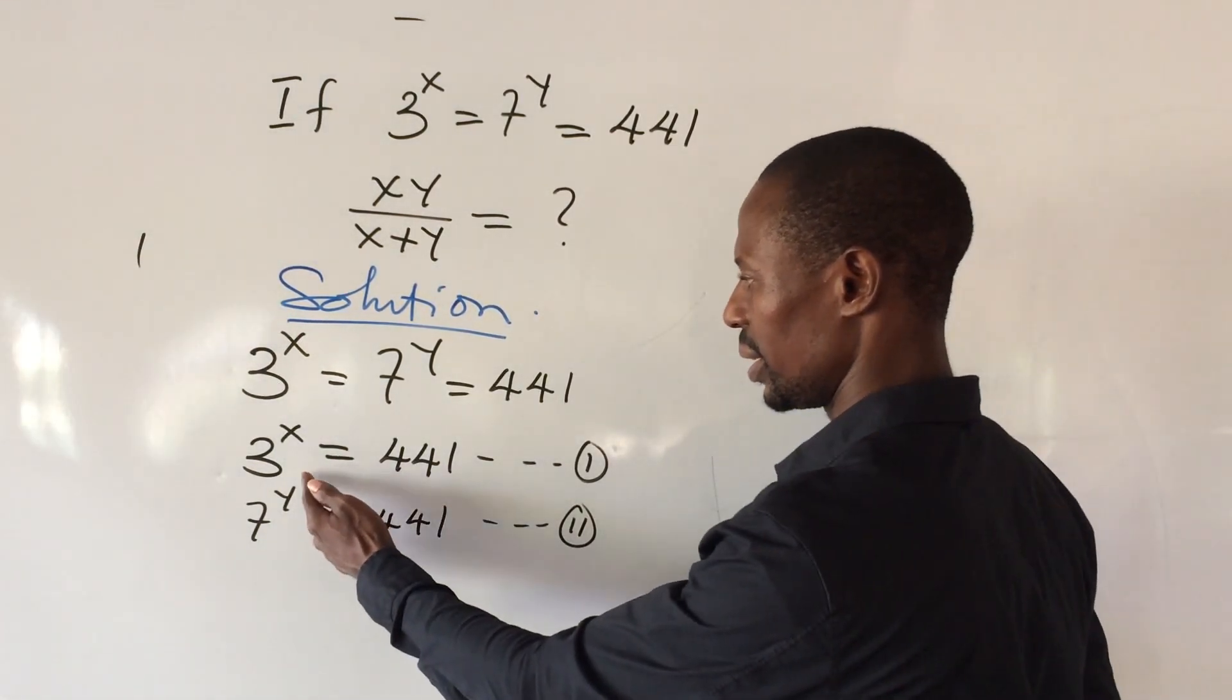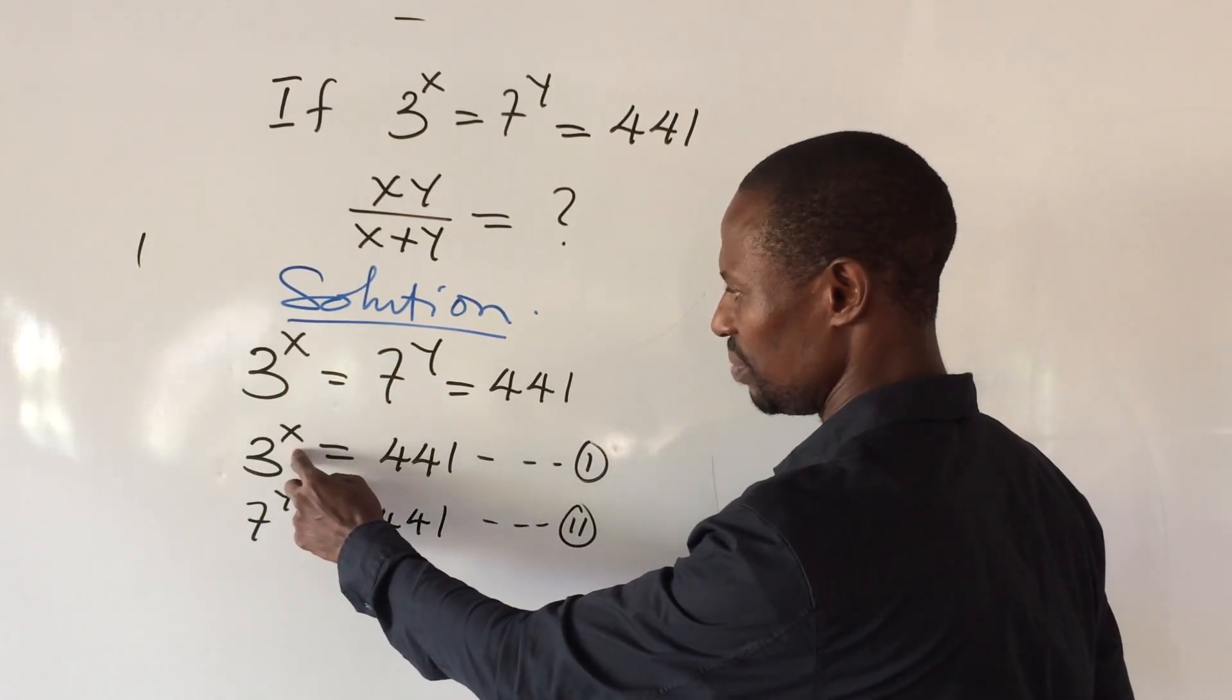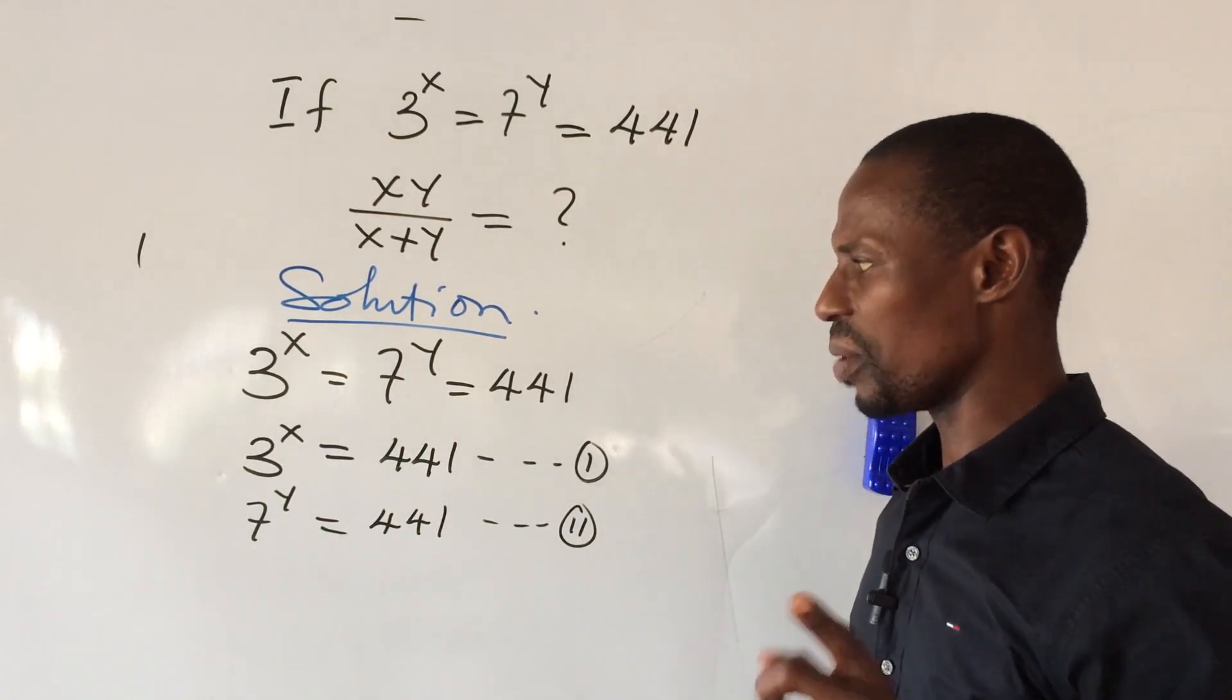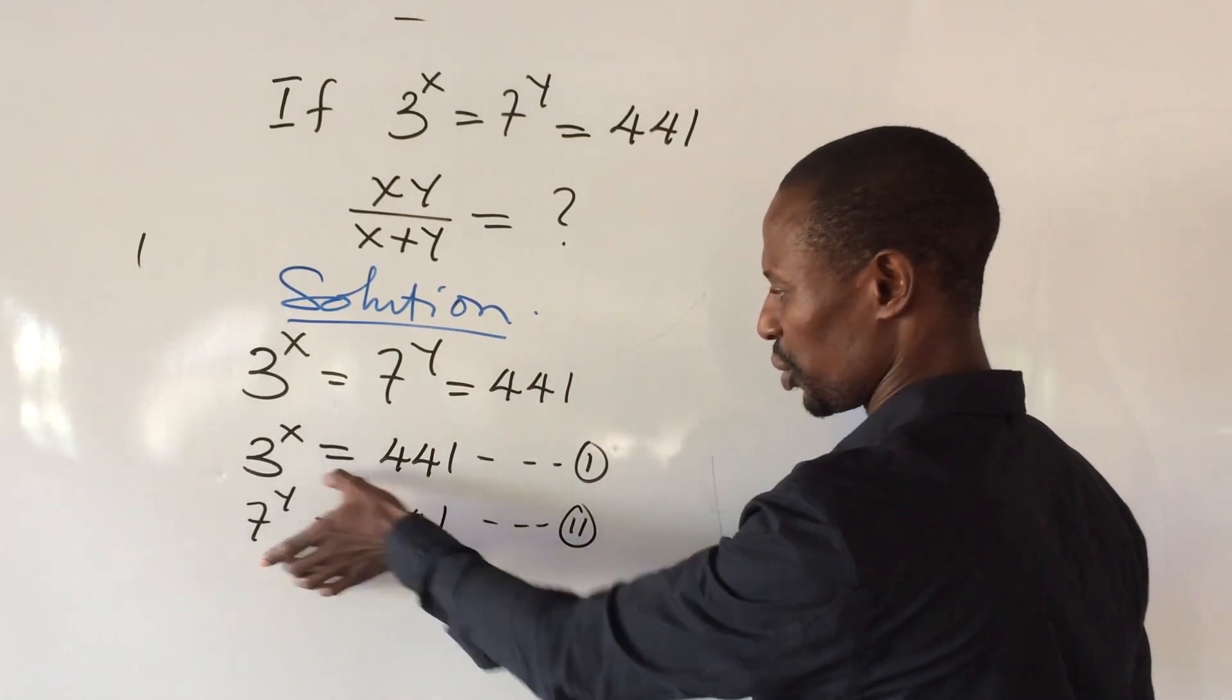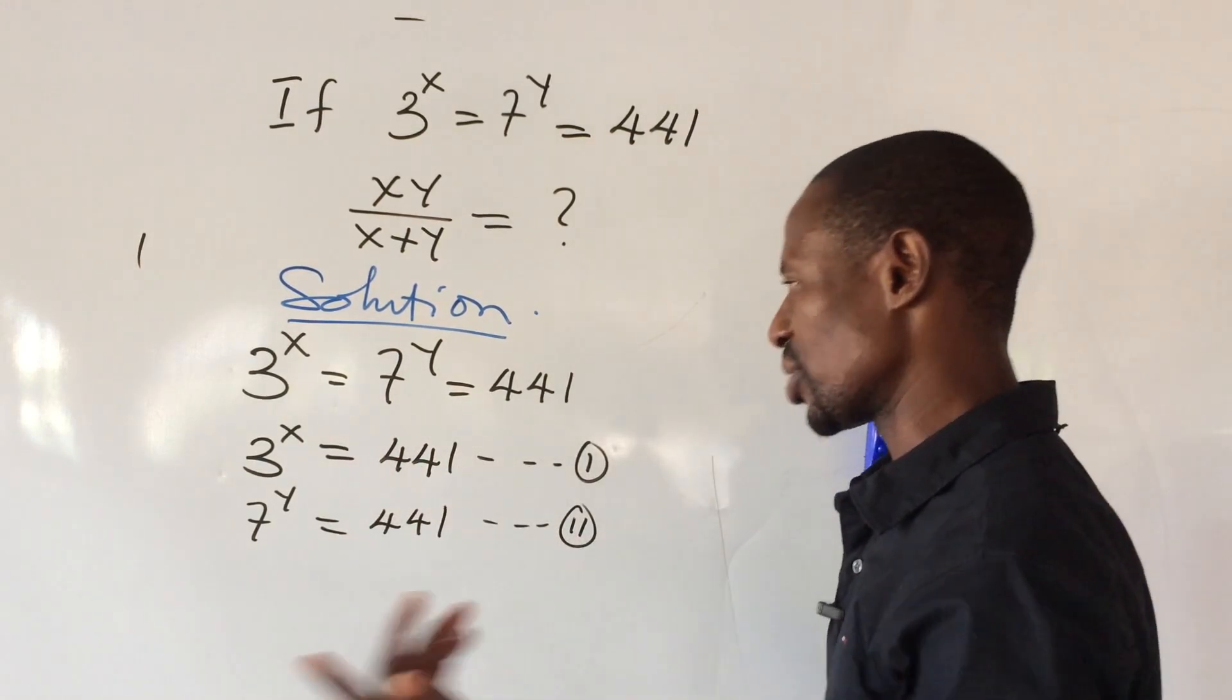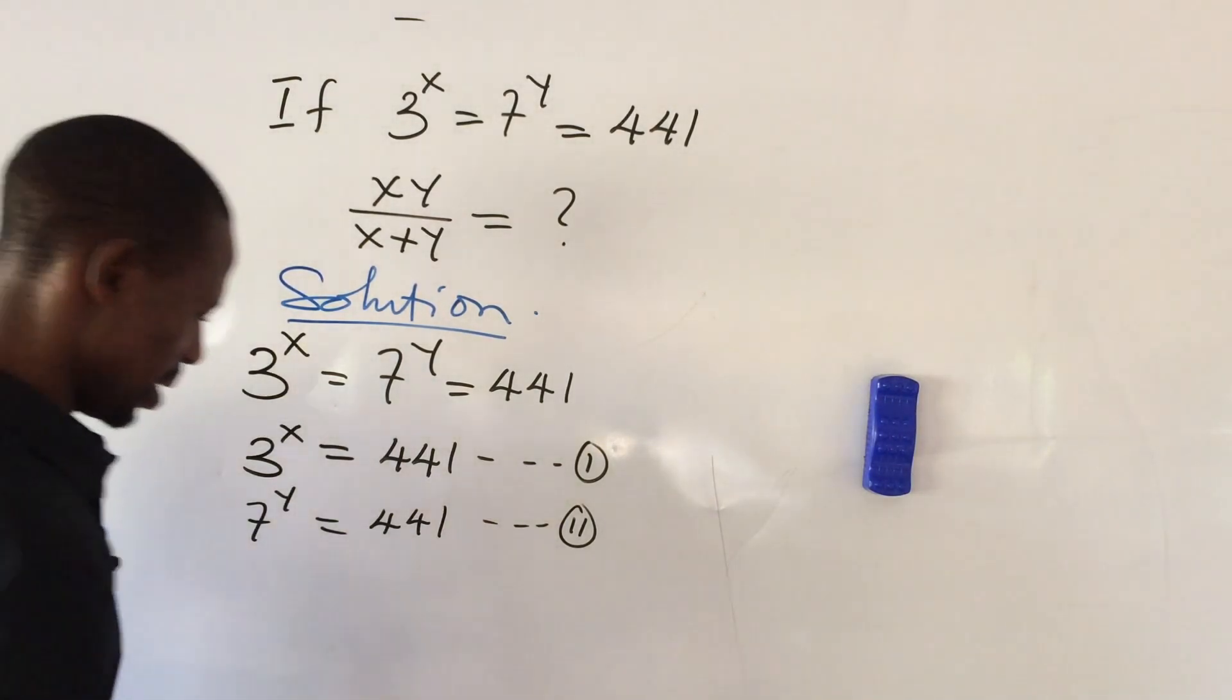Now that we have this expression here now, what if I decide to eliminate x and y from here? It means I will multiply equation 1 power by 1 all over x, and equation 2 power by 1 all over y. By so doing, x will leave the exponent. So let's proceed.